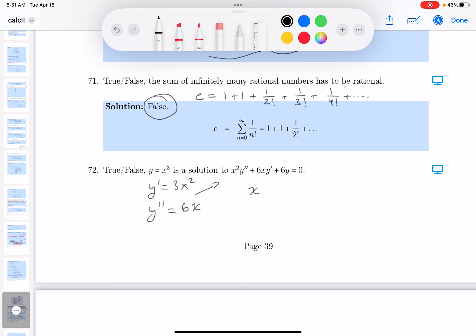Let's see what happens. You get x squared, y double prime is 6x, and then you get 6x times y prime, which is 3x squared. And then you're going to get plus 6 times y, well, y is x cubed, and they claim that's equal to 0.